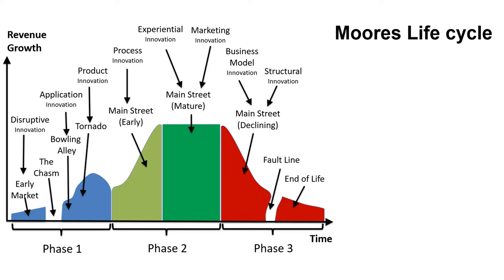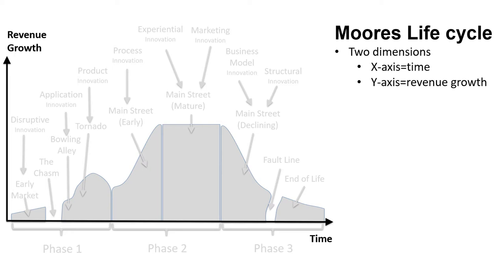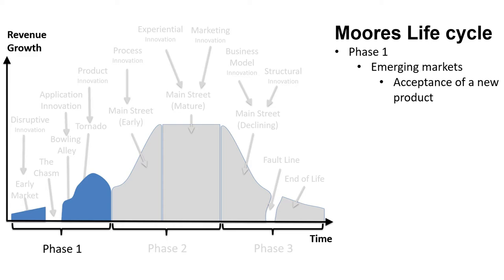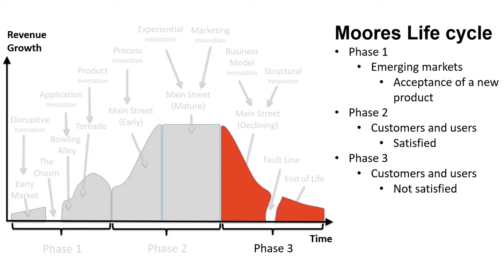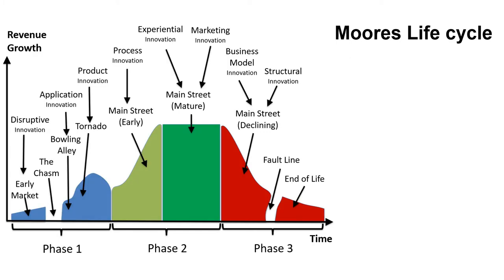Let us review the construction of the model. Moore's lifecycle consists of two dimensions. On the horizontal x-axis, we find time going from left to right, and on the vertical y-axis is revenue growth going from bottom to top — the higher, the more revenue. Moore's model is divided into three main phases. The first phase is about emerging markets and getting the acceptance of a new product. In the second phase, customers know the products and are generally satisfied. In the third phase, customers are looking for alternatives.